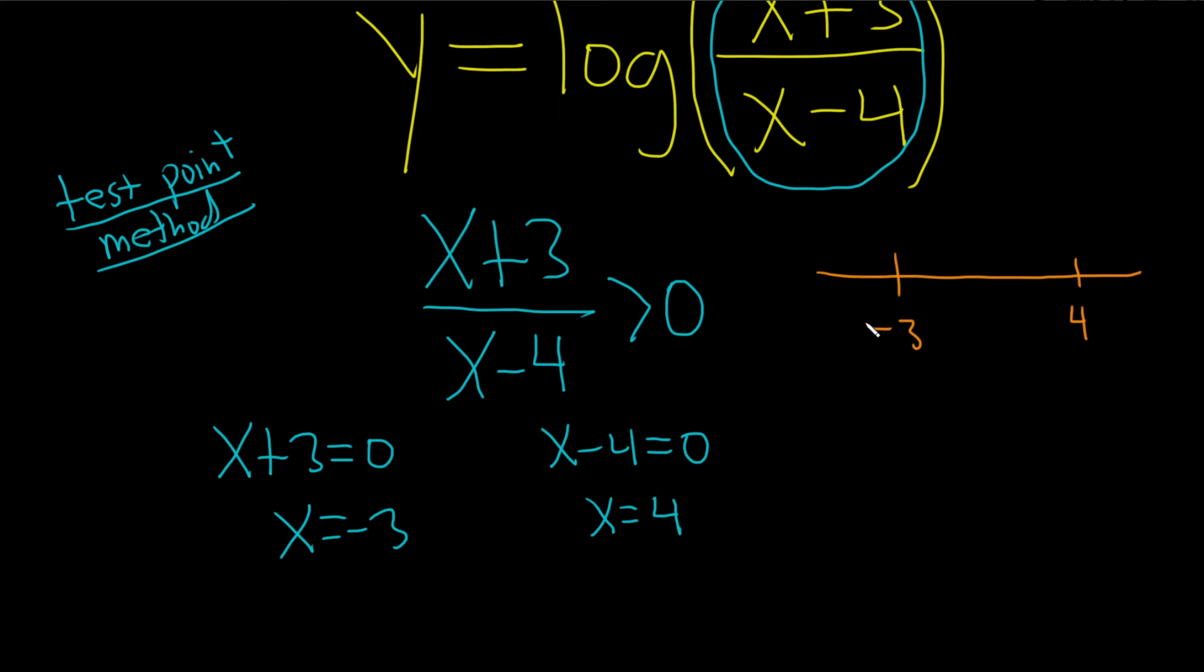So what you're supposed to do is you're supposed to pick a number over here and plug it in here. If it's true, you shade here. If it's not true, you don't shade. Then you pick a number here between negative 3 and 4, and you plug it in. If it's true, you shade here. If it's not true, you don't. Then you do it again.